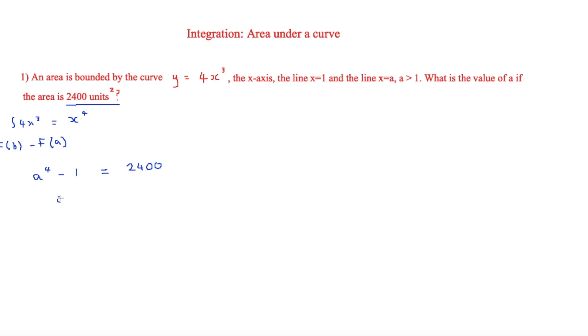So therefore, a to the 4 is equal to 2,401, which means that if you did 2,401 to the 1 quarter you'd write on your calculator, then you know that a is equal to 7. And that is your answer. So it's that simple.